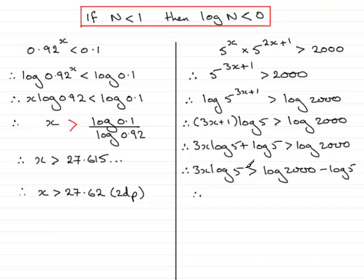So that means that the inequality does not have to be reversed. So what we have is x is greater than the log of 2,000 minus log 5 all divided by the log of 5, and that's being also multiplied by the 3, so divided by 3 log 5.